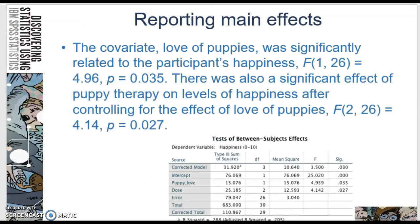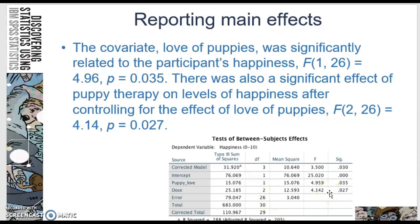This is how you would report your results and where you get the numbers from. Your test of between-subjects effects is the third table on the output. The covariate, love of puppies, was significantly related to a person's happiness — F(1, 26) = 4.96, p = 0.035 — telling us that puppy love was significantly related to happiness. There was also a significant effect of puppy therapy on levels of happiness after controlling for the effect of puppy love: F(2, 26) = 4.14.